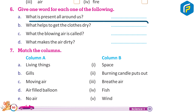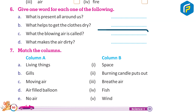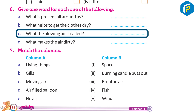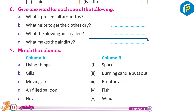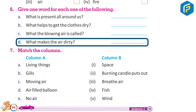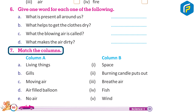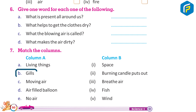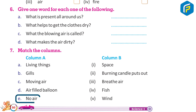Give one word for each of the following: a) What is present all around us? b) What helps to get the clothes dry? c) What is the blowing air called? d) What makes the air dirty? Match the columns — Column A: living things, fish, moving air, air-filled balloon, no air. Column B: space, burning candle puts out, breathe, fish, wind.